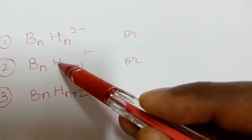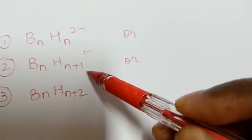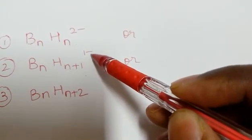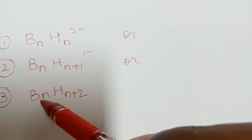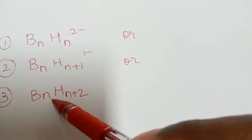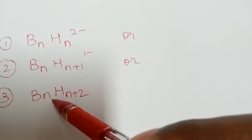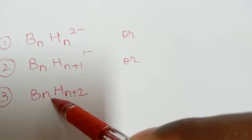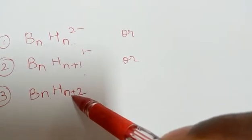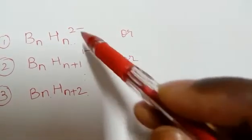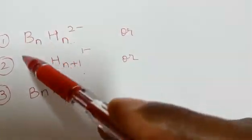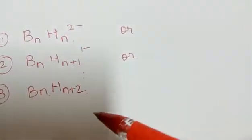Similarly, if you have BnHn+1 and the charge is 1-, or BnHn+2 without a charge, these three formulas will be considered as Closo structures.